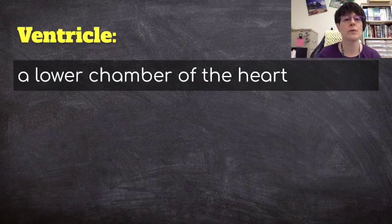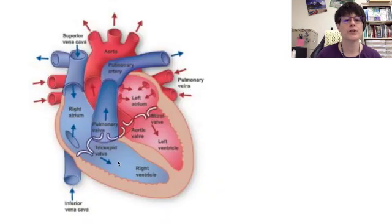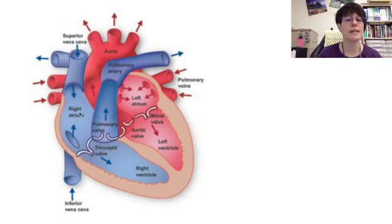A ventricle is a lower chamber of the heart. There are two ventricles. I remember that ventricles are on the bottom because they're shaped like Vs — you can kind of see that with this valve, that it's shaped like a V. Also, you could think that A is on the top because it comes first in the alphabet, and V is on the bottom because it comes towards the end of the alphabet.